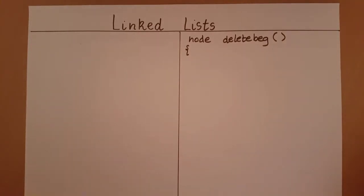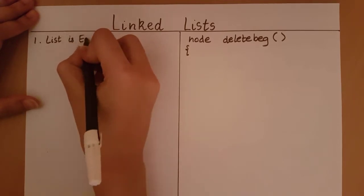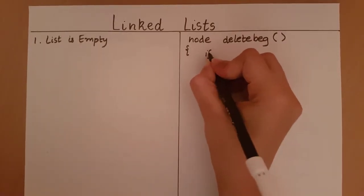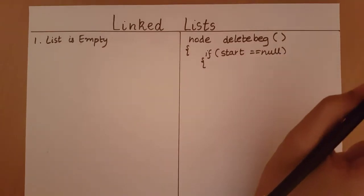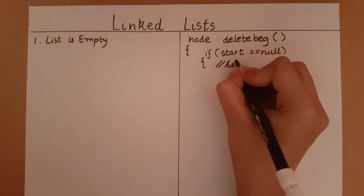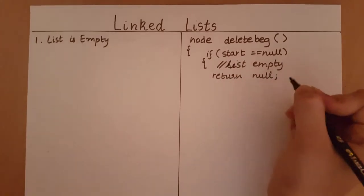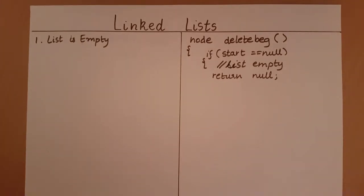Let's look at the different cases we can come across. The first case is if the list is empty. When the list is empty, we don't have any element to delete. In such a case, we don't want to continue with our function and we would like to return. If start is equal to null, we say that the list is empty and we return from the function. I'm returning null because the return type of this function is type node, and since I cannot find any node to delete, I'm going to return a null value.